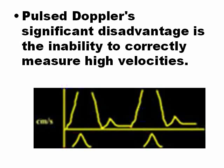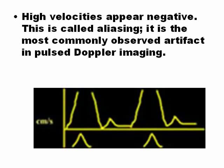Aliasing occurs when velocities are too high — the machine displays those velocities as negative. High velocities appear negative. This is called Aliasing and it is the most common artifact of Pulsed Doppler.